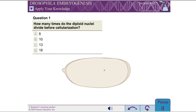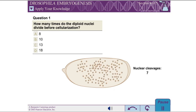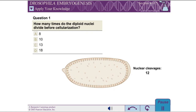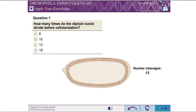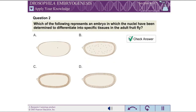Question 1: How many times do the diploid nuclei divide before cellularization? Question 2: Which of the following represents an embryo in which the nuclei have been determined to differentiate into specific tissues in the adult fruit fly?